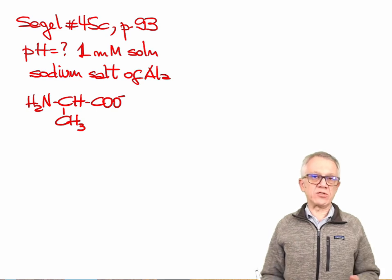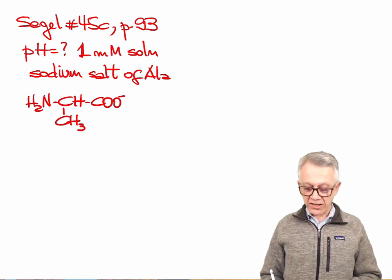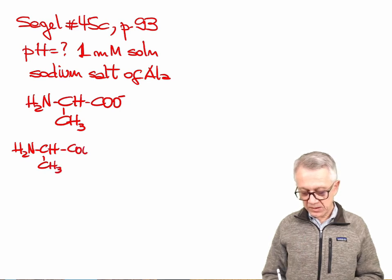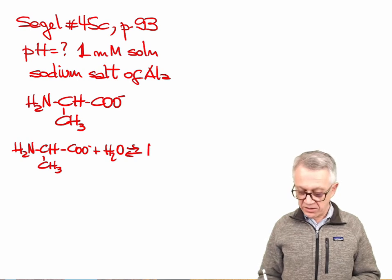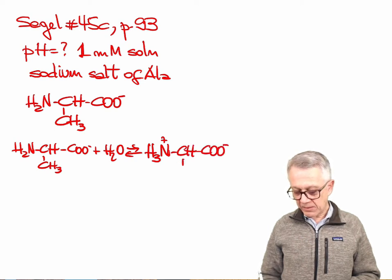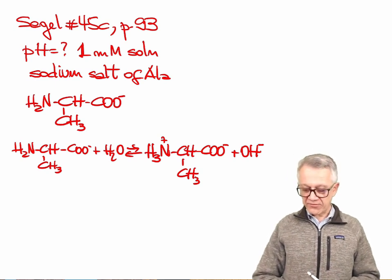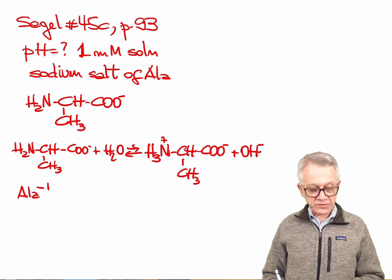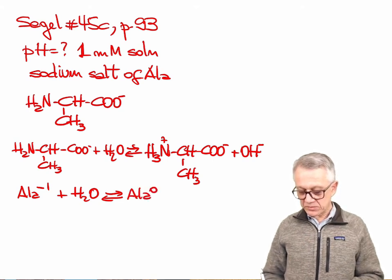The amino group cannot be protonated otherwise it's going to be isoelectric alanine. So what happens is that when we put this thing in water this is going to undergo hydrolysis. The H2N-CH-CH3 in water is going to undergo hydrolysis and it's going to protonate the amino group, CH3 plus hydroxide. So that's going to be a hydrolysis and if you write it in the three letter code it's going to be ALA minus one with water undergoing hydrolysis and it becomes alanine zero plus hydroxide.